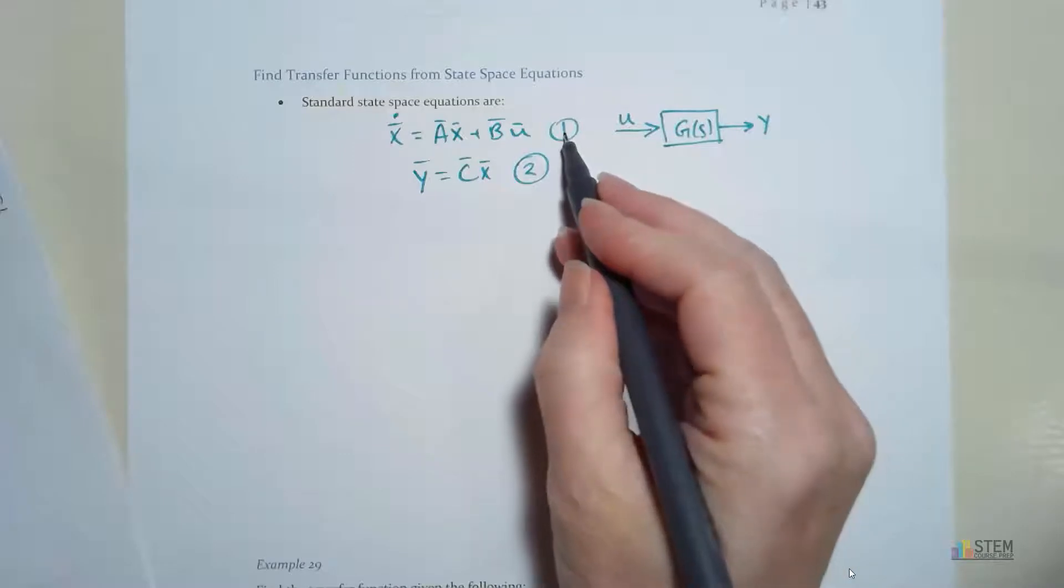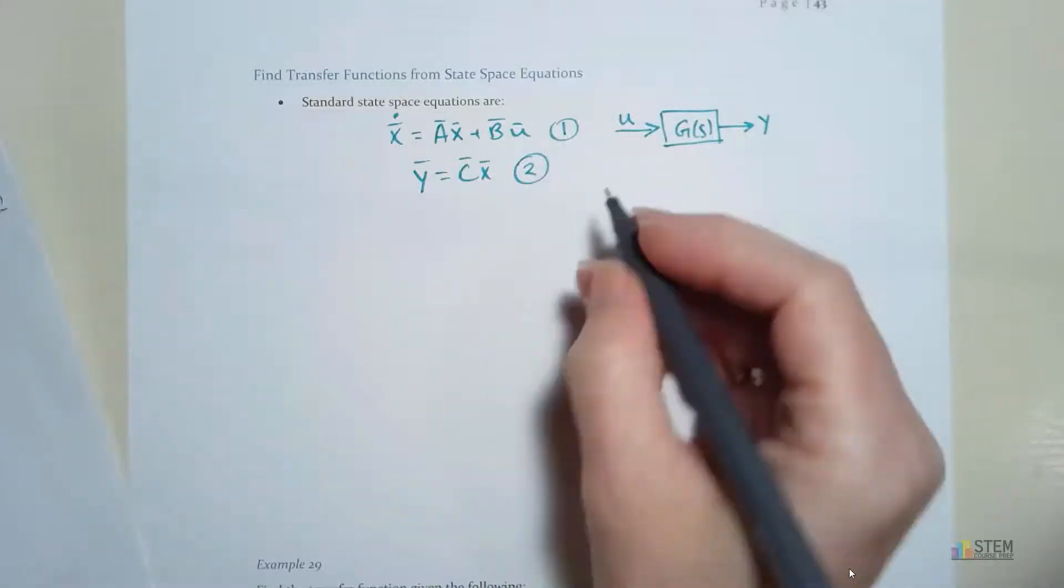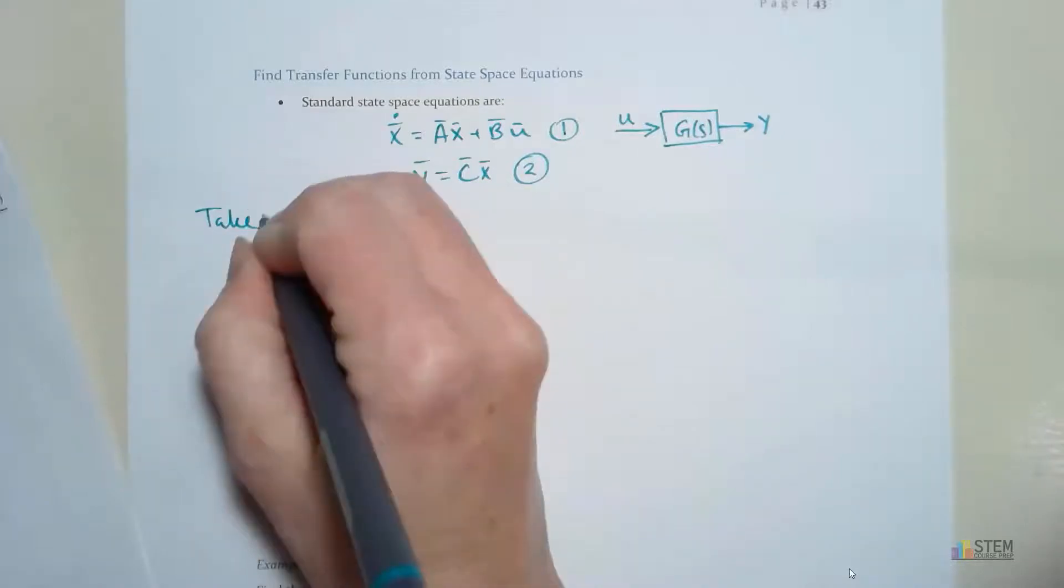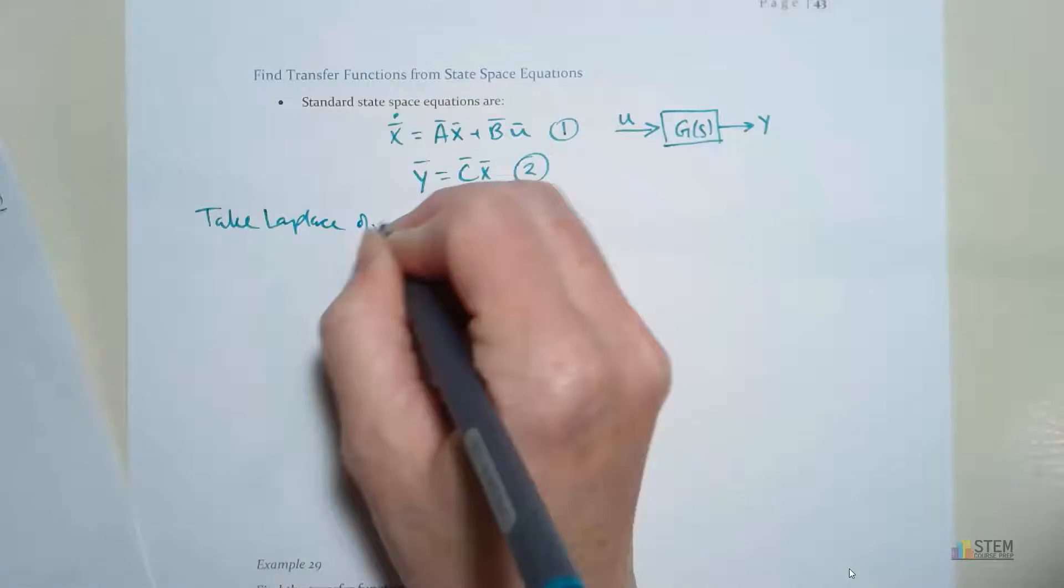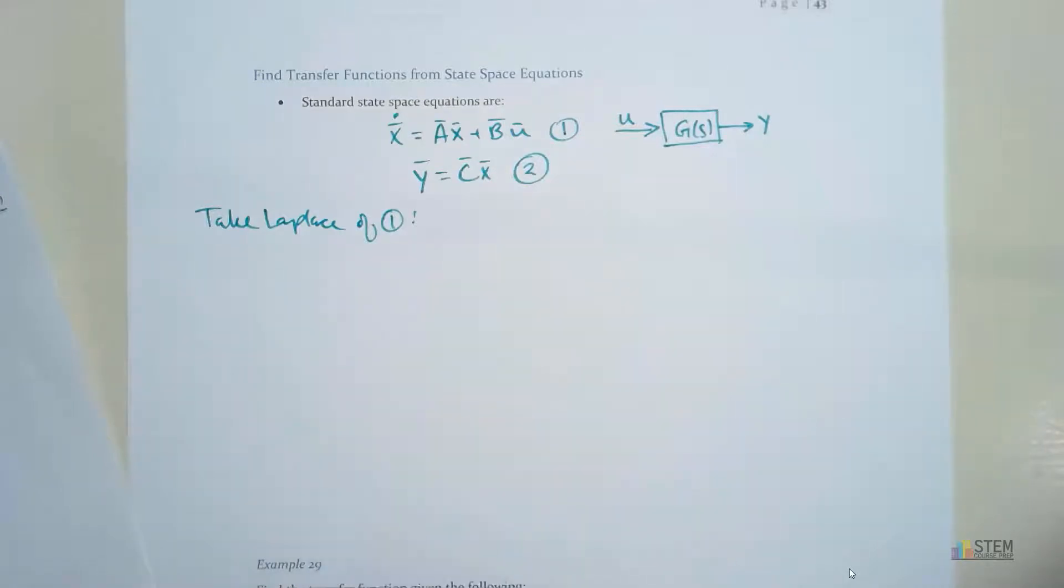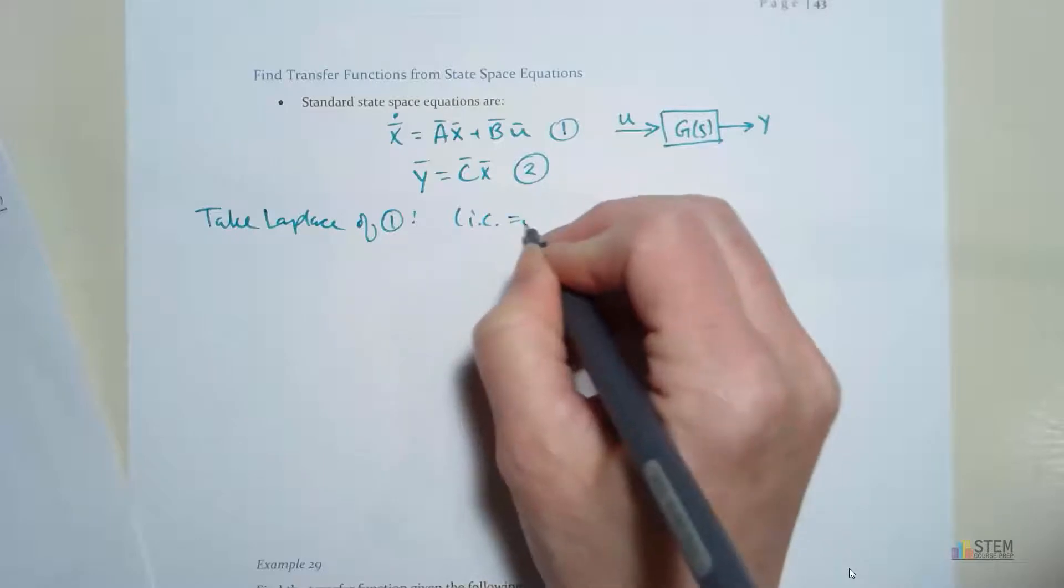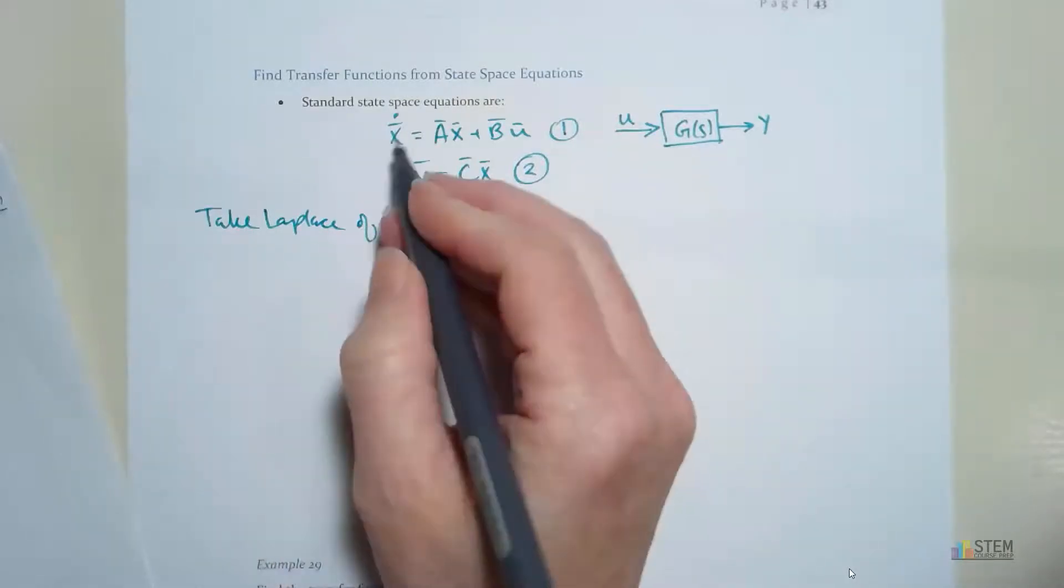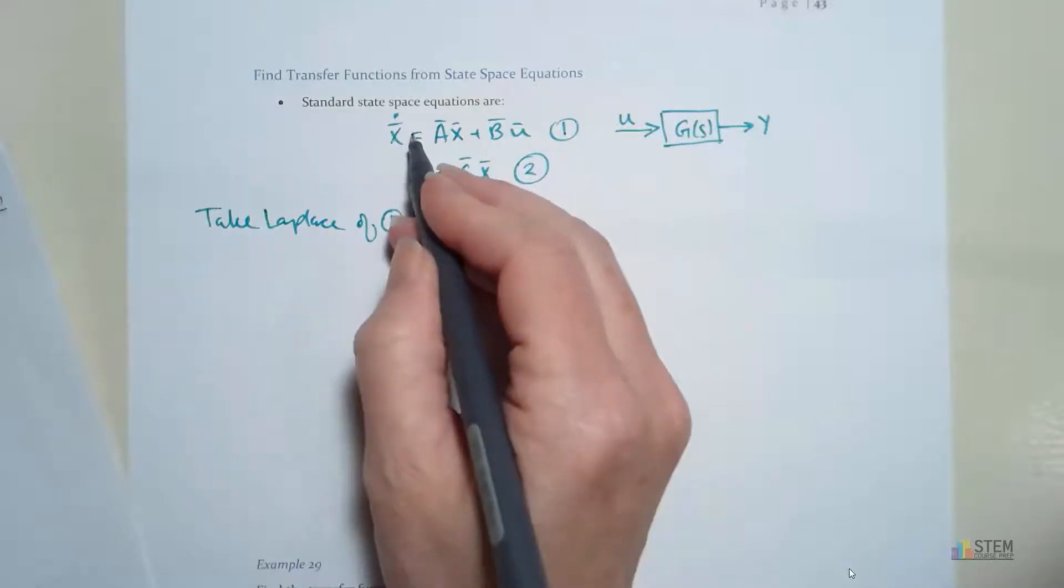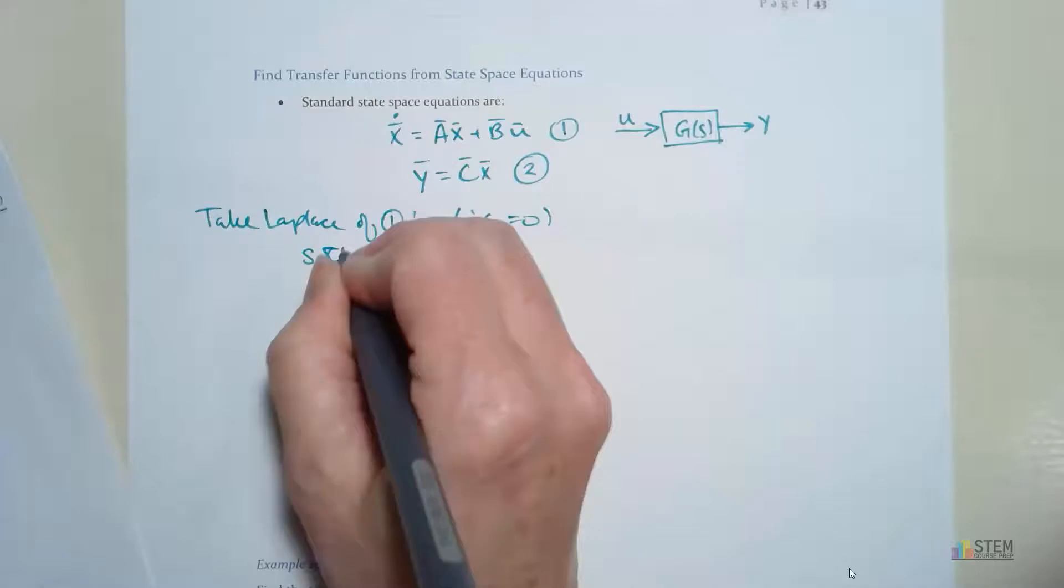We're going to start out by taking the Laplace transform of equation 1 here. So let's take the Laplace of 1. And if we do that, let's note that initial conditions are 0. And then when we take the Laplace transform, notice this is a derivative, so use the differentiation theorem. That's going to give you s times capital X of S.